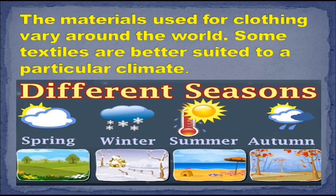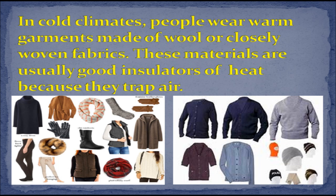The material used for clothing varies around the world. Some textiles are better suited to a particular climate. In cold climates, people wear warm garments made up of wool or closely woven fabrics. These materials are usually good insulators of heat because they trap air.